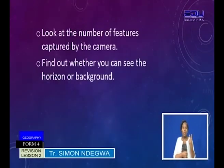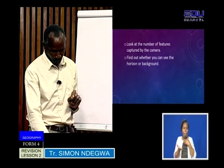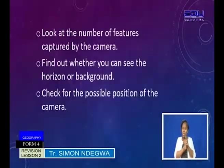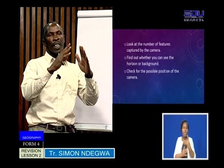Number two: find out whether you can see the horizon or the background. It is a very important feature on a photograph and will guide you in knowing what kind of photograph we are talking about. Also, check for the possible position of the camera — was it focused on one item or one feature, or was it focused on a general area capturing several different items? It is important to know the possible position of the camera in order to determine the type of photograph.